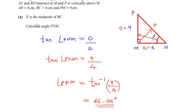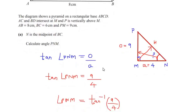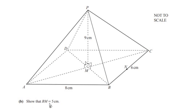So the angle PNM is 66.04 degrees. Now let us look at the next part of this question: show that BM is equal to 5 centimeters. In part A we had seen that MN was taken as 4 centimeters — that was half of the length.